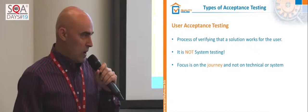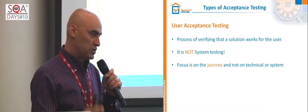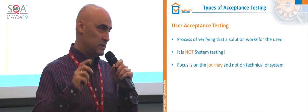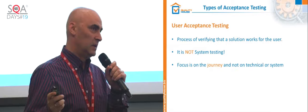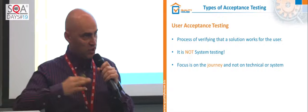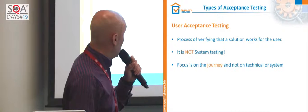So what is user acceptance testing? This is usually the process where you verify that your solution — and be careful, I talk about solution, not only the system — works for the user. It is not system testing. The objective is completely different. It is not just checking the functionality of the software system; it is verifying the business requirements of the customer. It is more like a journey through the system, not only a technical system.